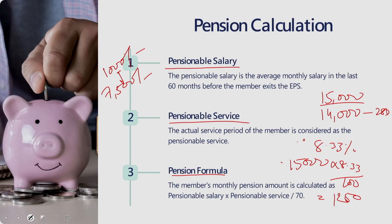For pensionable service, the actual service period is considered and service periods under different employers are added together. The employee must get the EPS scheme certificate issued and submitted to the new employer every time he switches a job. The employee gets a bonus of 2 years after completing 20 years of service. The pensionable service period is calculated on a 6-month basis: if service is 8 years 2 months, it is considered 8 years; if it is 8 years 10 months, it is taken as 9 years.